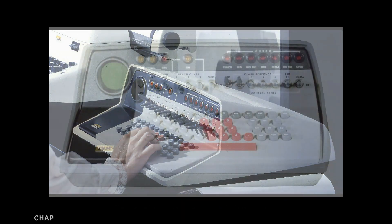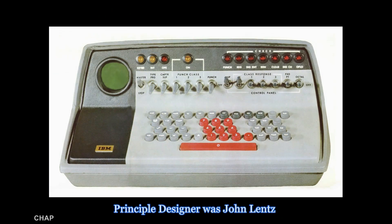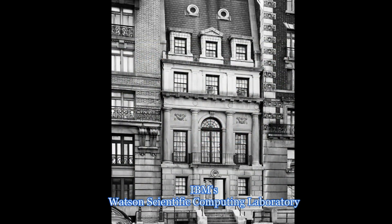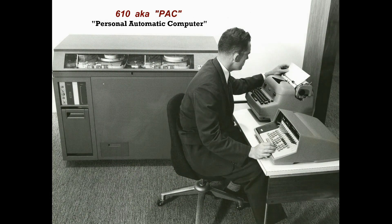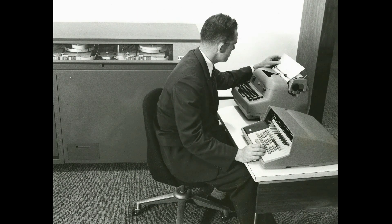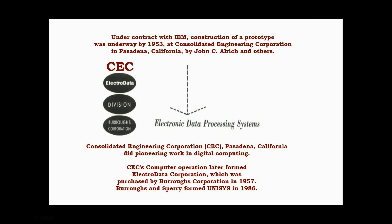The principal designer was John Lentz of IBM's Watson Scientific Computing Laboratory at Columbia University. Originally called the Personal Automatic Computer, or PAC, research and design began around 1948. Under contract with IBM, construction of a prototype was underway by 1953 at Consolidated Engineering Corporation in Pasadena, by John C. Aldrich and others.